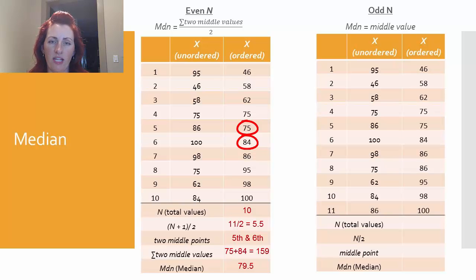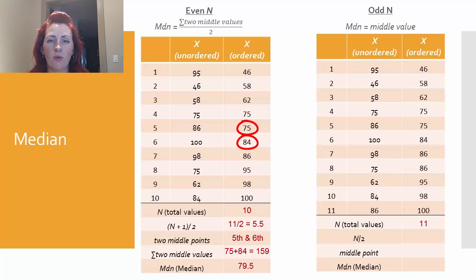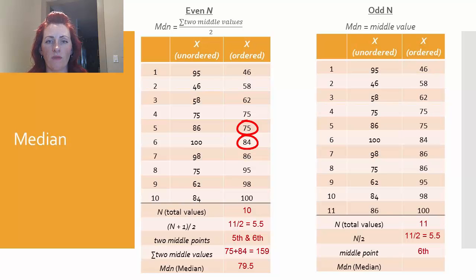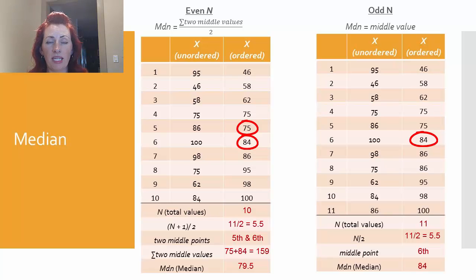For the odd number of data points example, we again order the data set from 46 to 100. Since we have the extra value of 86 added, we now have 11 total values — n = 11. We take n divided by 2, which again gives us 5.5, and we round up to 6. The sixth data point is 84, which is our median. This intuitively makes sense because that sixth data point has five values falling below and five falling above. As with the mean, the second data set has a larger median than the first, so overall this second data set has larger measures of central tendency.